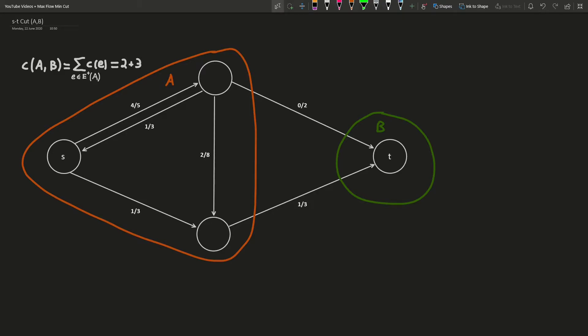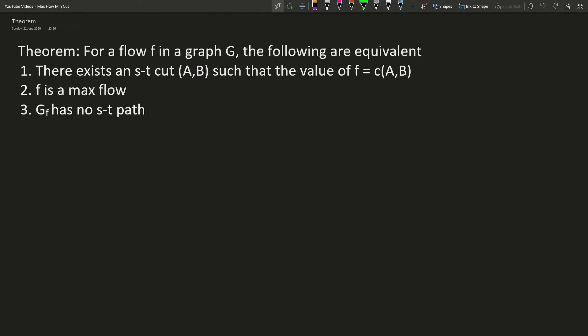The minimum cut is the ST cut with minimum capacity. In this graph, the minimum cut would be as shown with a capacity of 5. Now that we know what an ST cut is, we can prove the theorem.